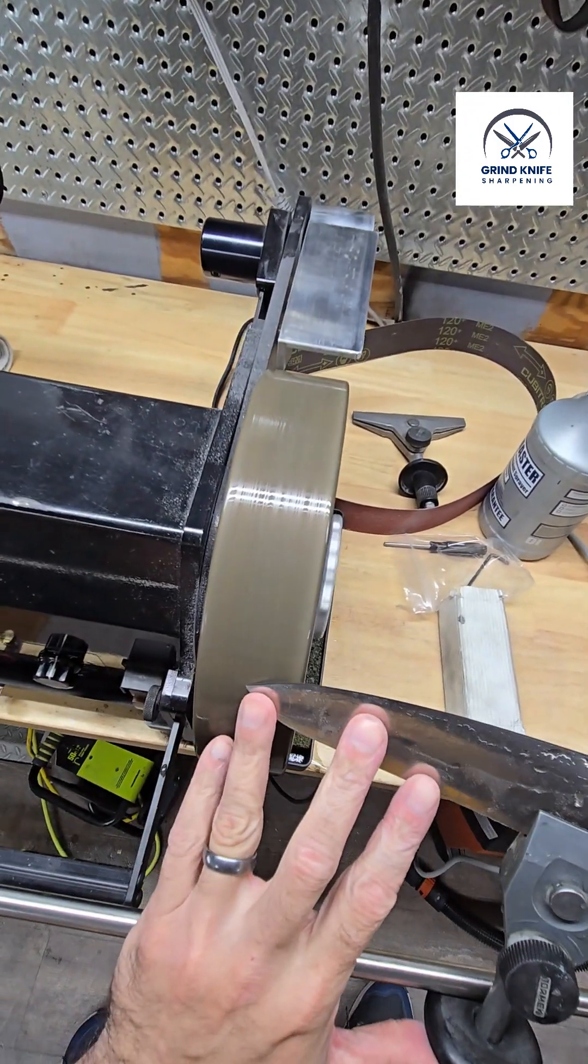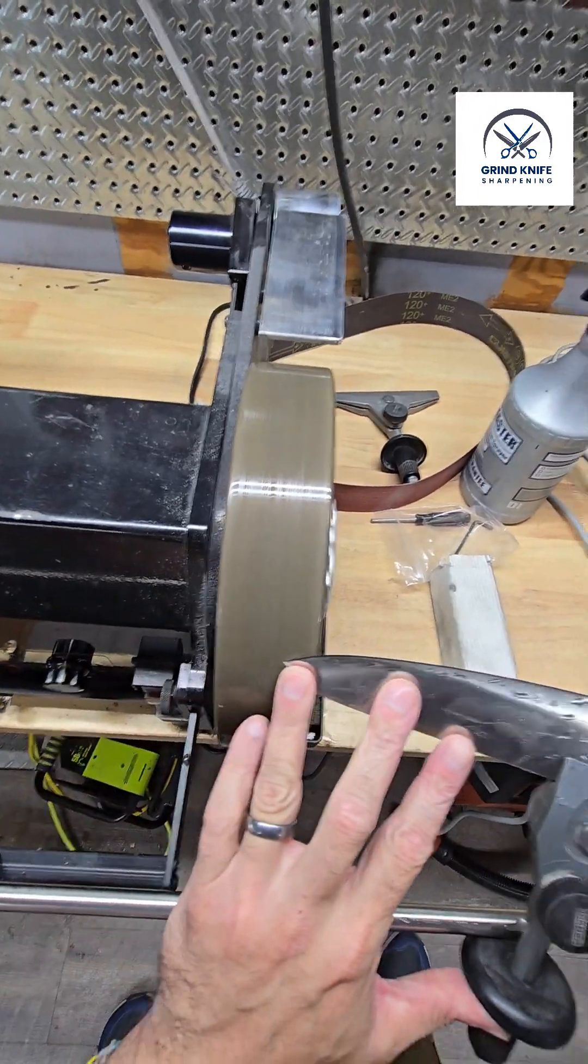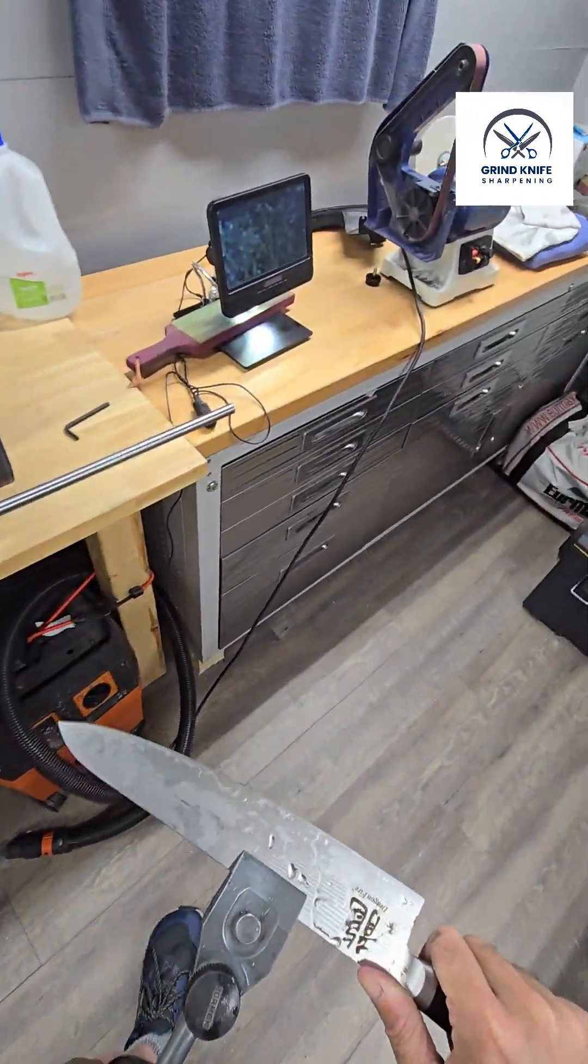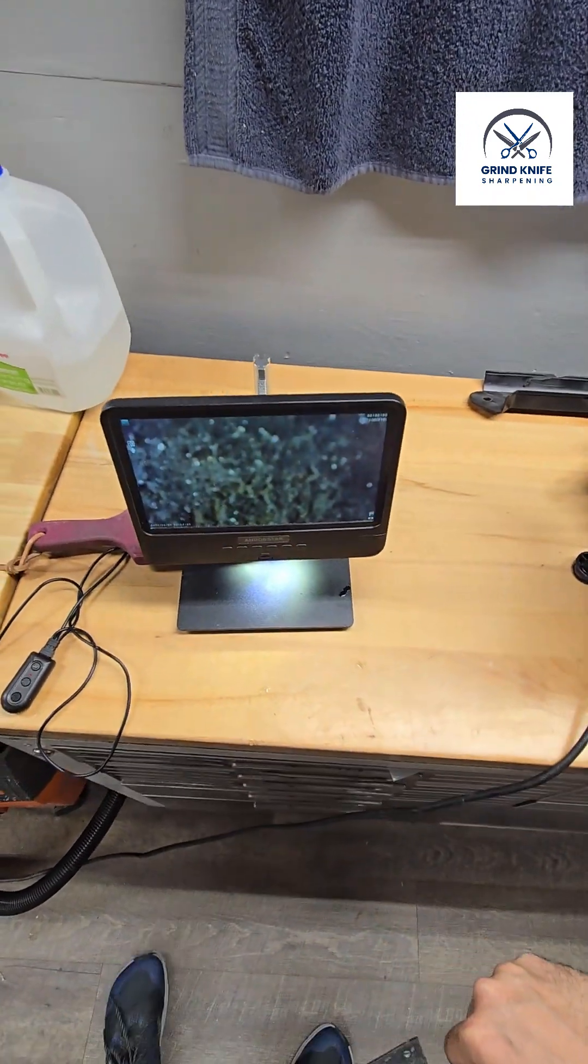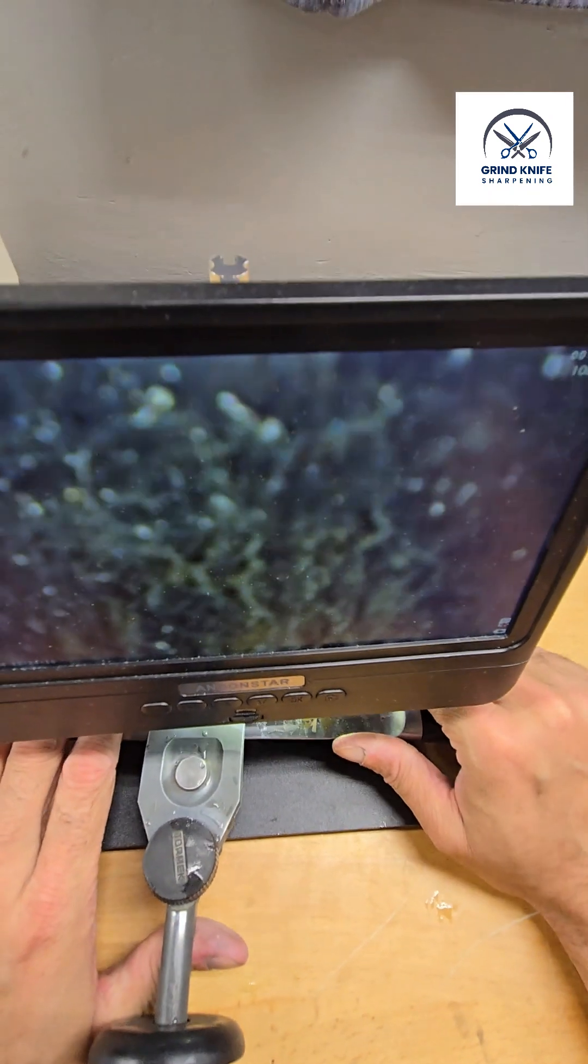So at this point, one more light pass. One more light pass. Okay, let's dry this off and take a look under our microscope what a 1000 grit pass looks like.